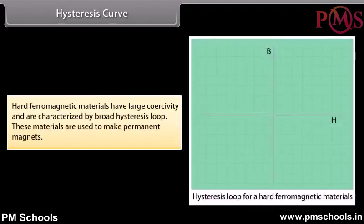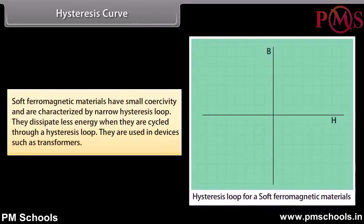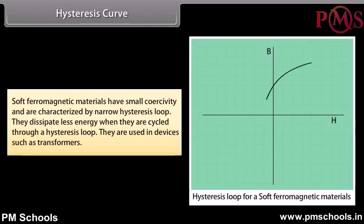Hard ferromagnetic materials have large coercivity and are characterized by a broad hysteresis loop; they are used to make permanent magnets. Soft ferromagnetic materials have small coercivity and a narrow hysteresis loop; they dissipate less energy per cycle and are used in devices such as transformers.